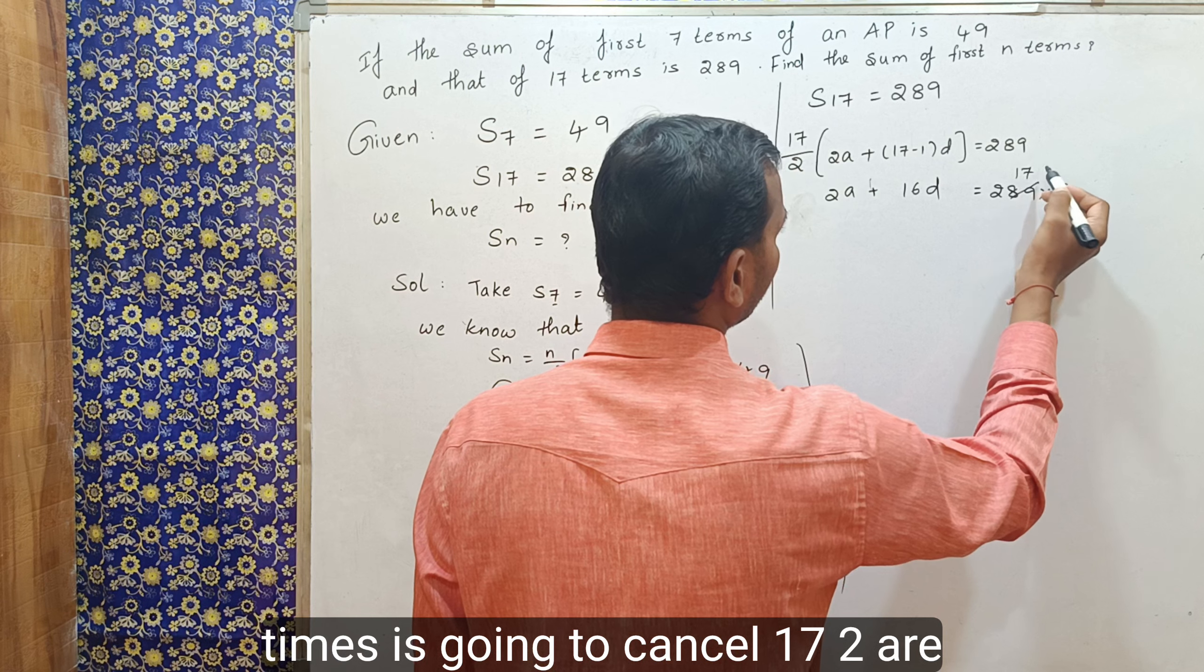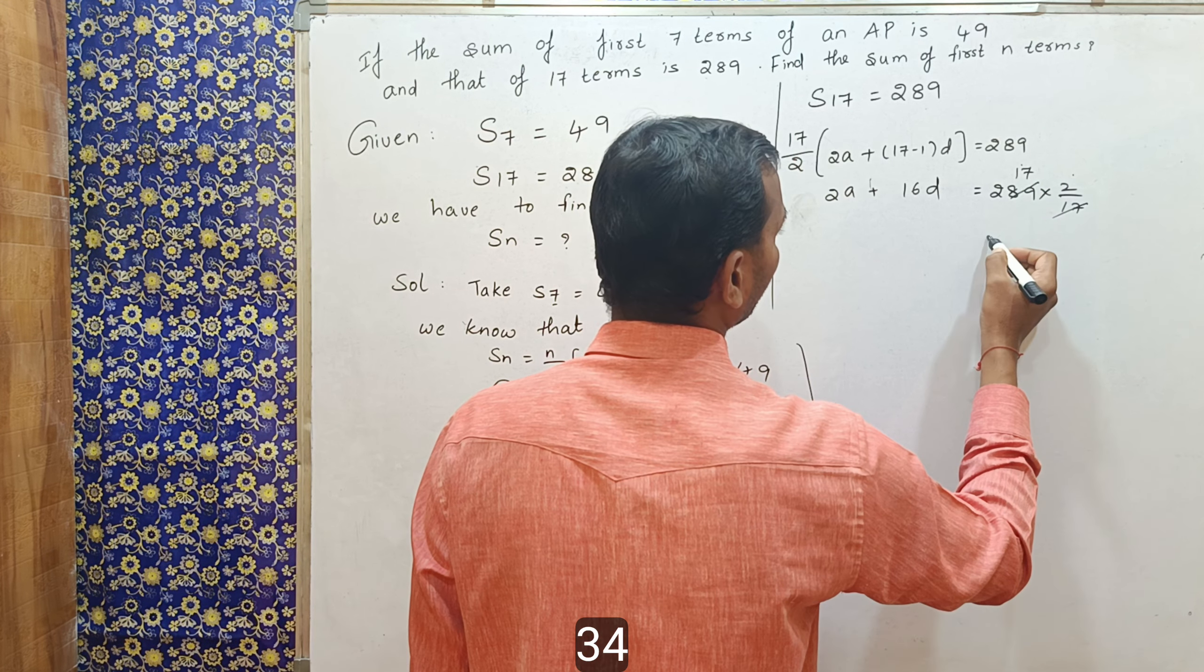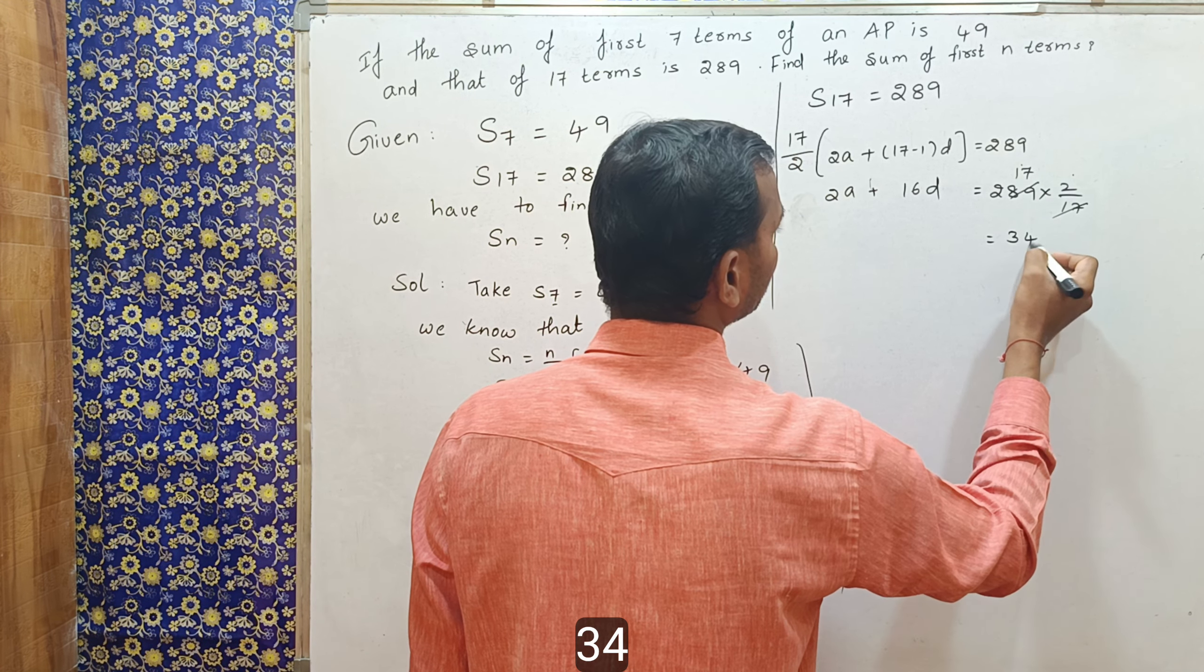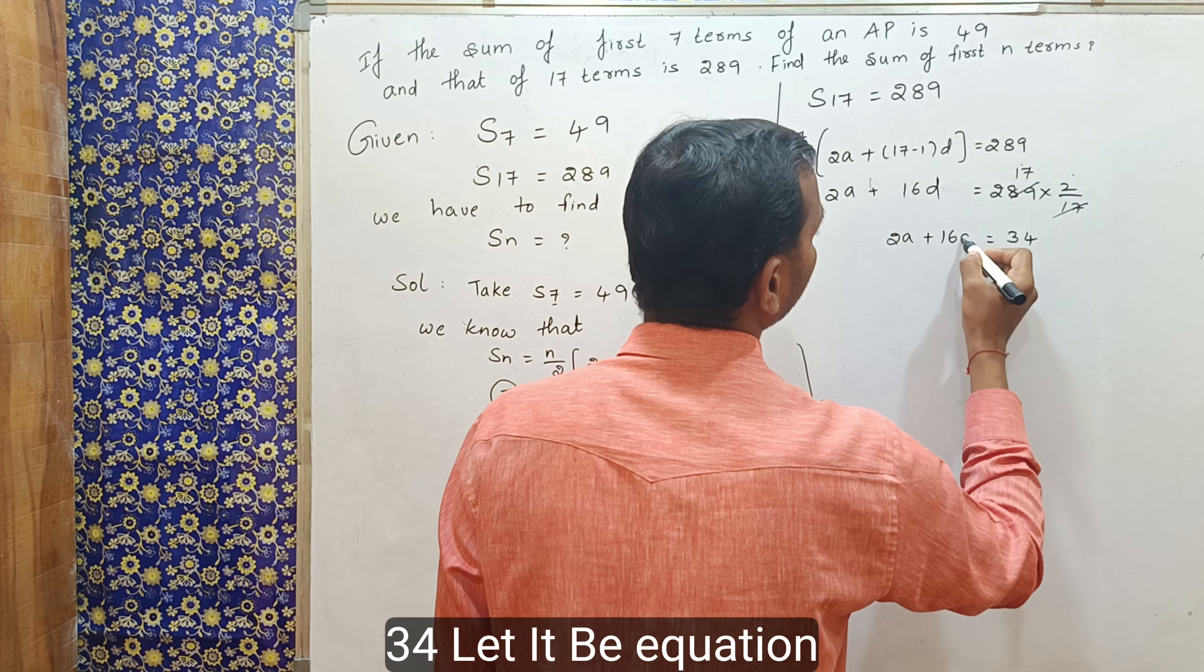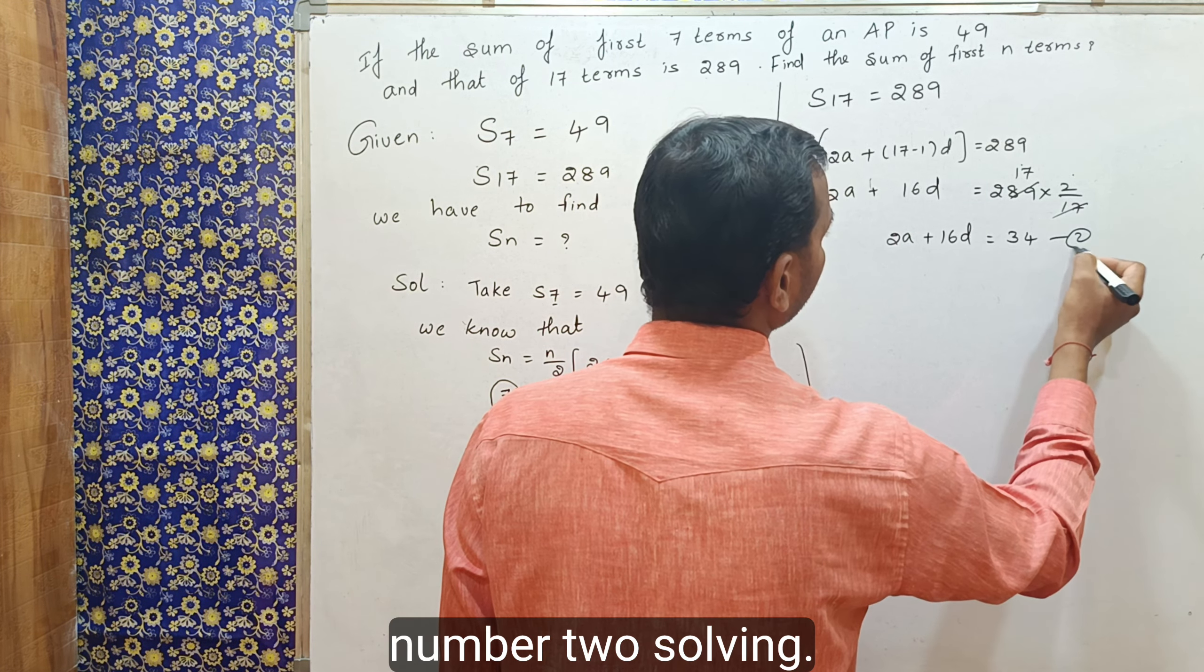17 times is going to cancel. 17, 2 is 34. So, 2a plus 16d is equal to 34. Let it be equation number 2.